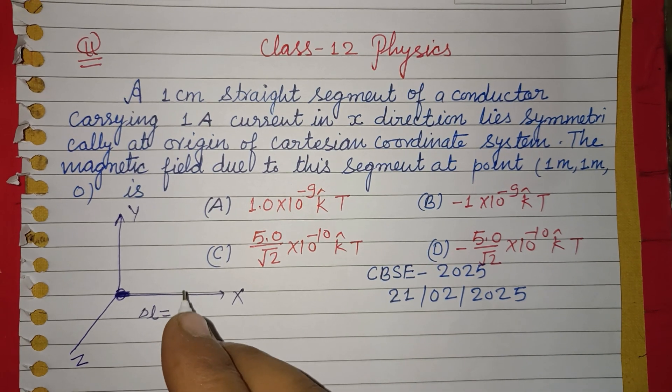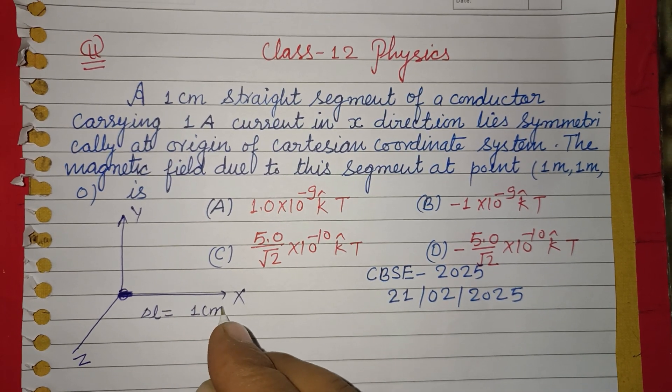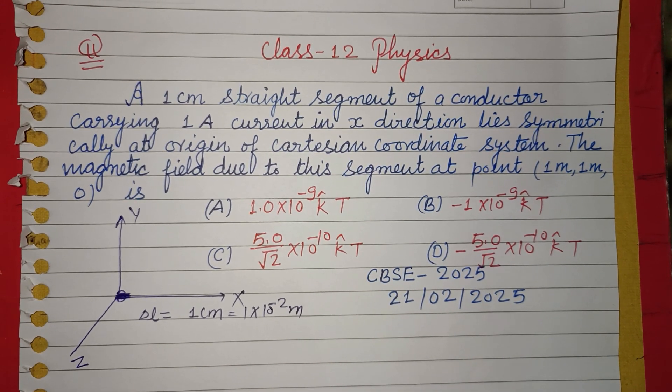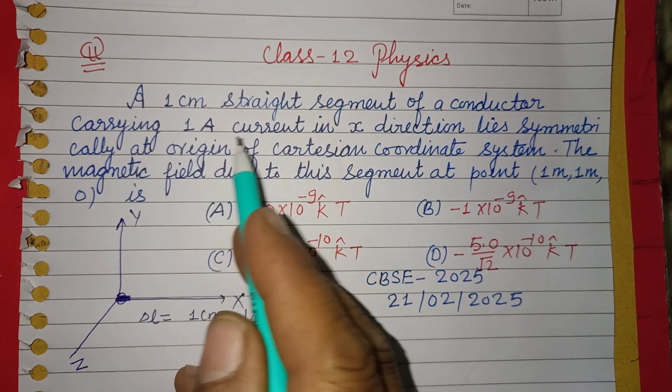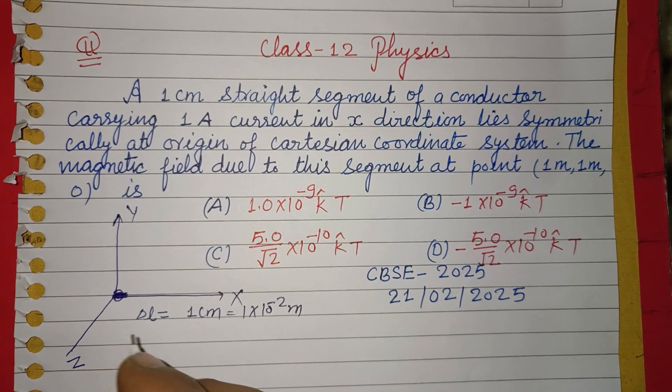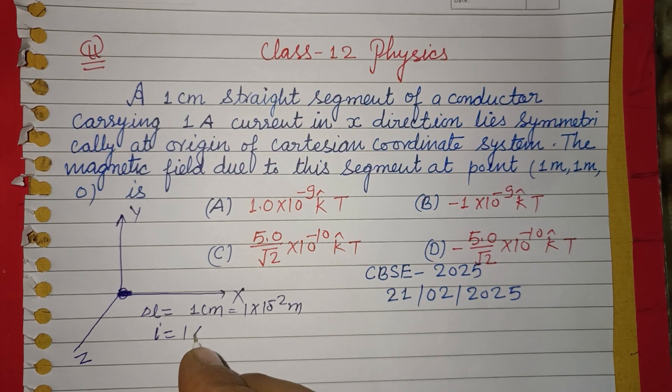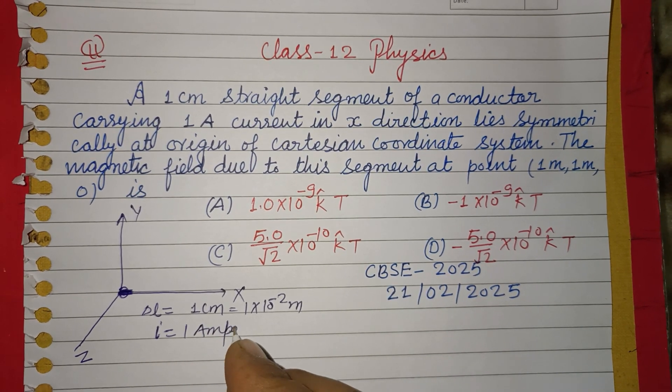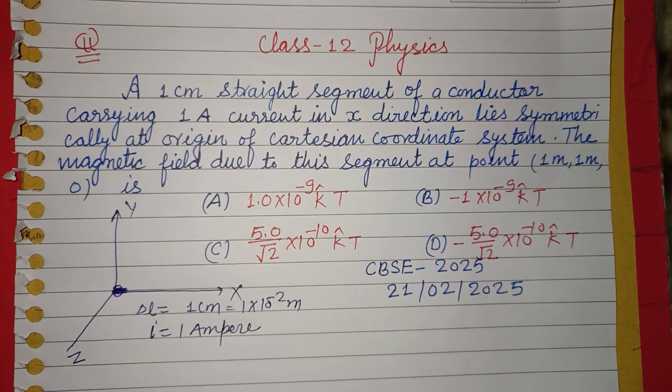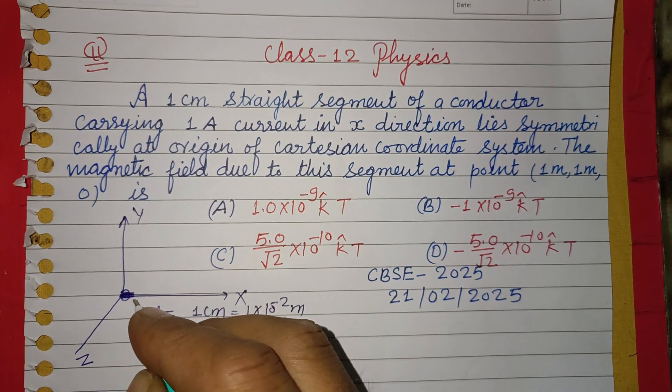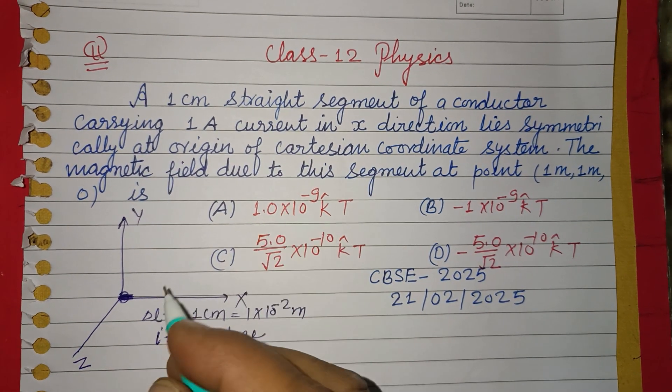The segment dlL is 1 cm, that is 1×10⁻² meter, carrying current I which is 1 ampere in x direction, symmetrically at origin.